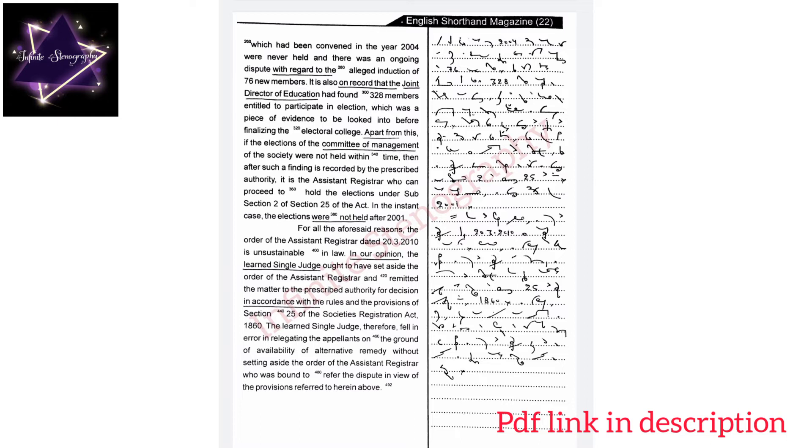never held and there was an ongoing dispute with regard to the alleged induction of 76 new members. It is also on record that the joint director of education had found 328 members entitled to participate in election which